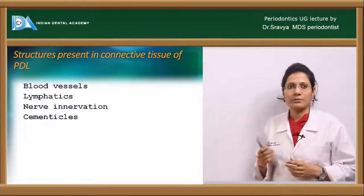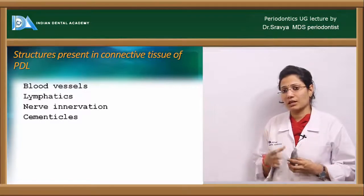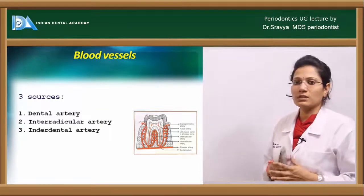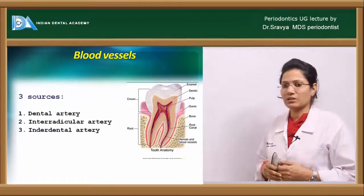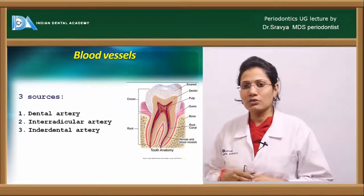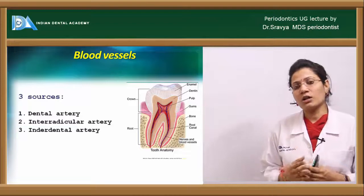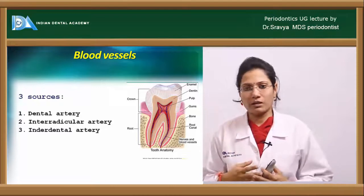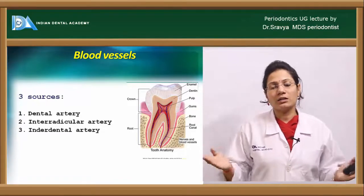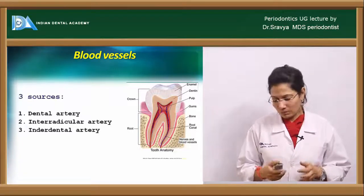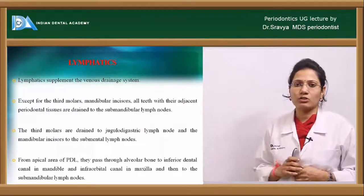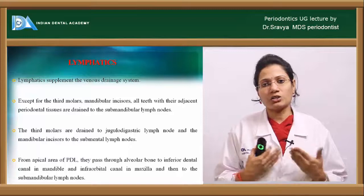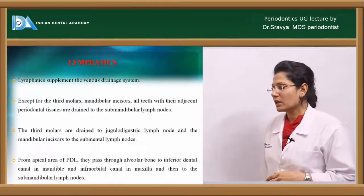The structures present in the connective tissue of the PDL include blood vessels, lymphatics, nerve supply, and cementacles. There are three important sources of blood vessels: the dental artery, interradicular artery, and interdental artery. The apical vessels of the dental artery give off branches into the PDL before penetrating the apical foramen to supply the pulp. The lymphatics follow the blood vessels and drain into the submandibular and submental group of lymph nodes.